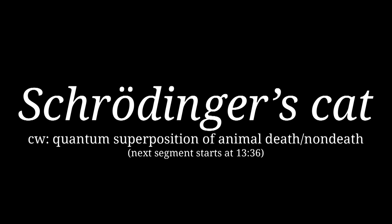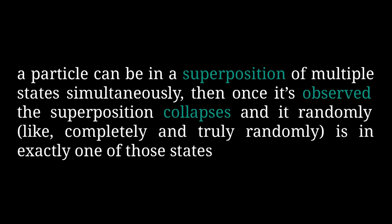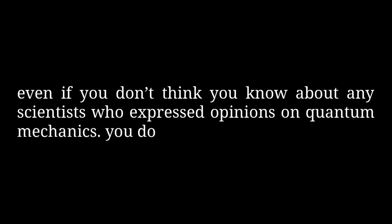Subatomic particles have this annoying tendency to behave differently depending on whether they're being observed. There's the concept of superposition, where a particle can be in multiple states simultaneously, but once observed, the superposition collapses and the particle randomly picks exactly one state according to some probabilistic function. A lot of people, including famous scientists, have pointed out this doesn't sound right — but it certainly appears to be the case from various experiments. One huge problem is that it's unclear exactly what counts as an observation, and that's where Schrödinger's cat comes in.